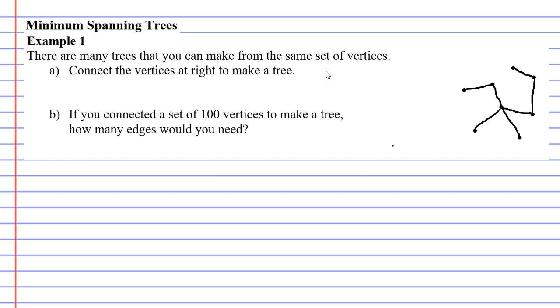A good way of checking that you've done it correctly is to count your vertices. We have 1, 2, 3, 4, 5, 6, 7, 8 vertices. And count the edges: 1, 2, 3, 4, 5, 6, 7 edges. That's good because we know we should have one less edge compared to the amount of vertices.